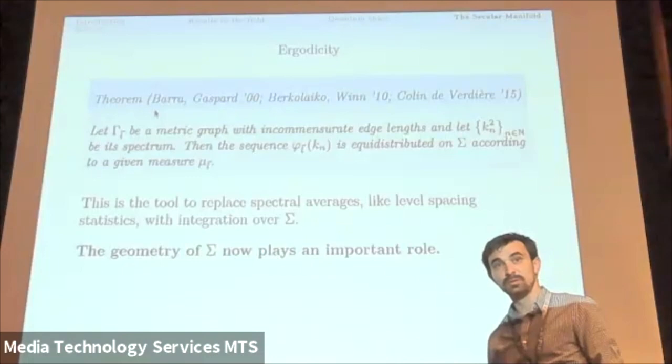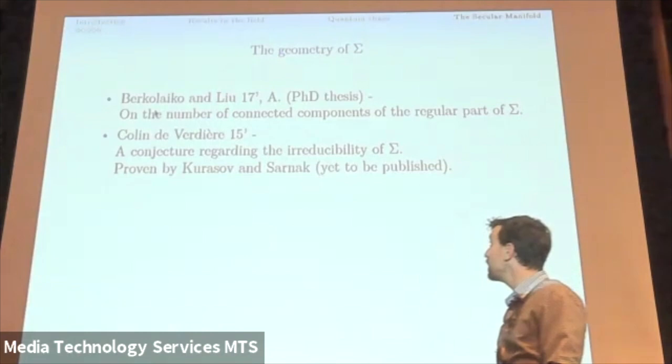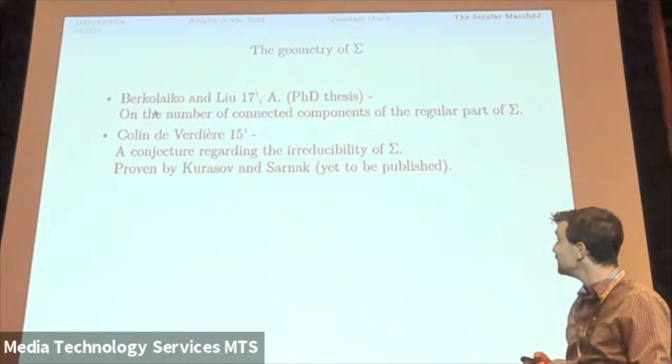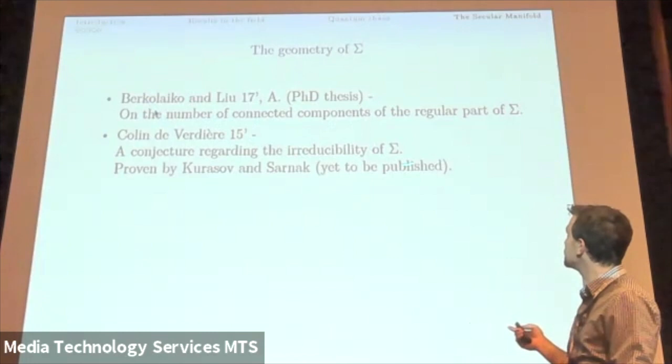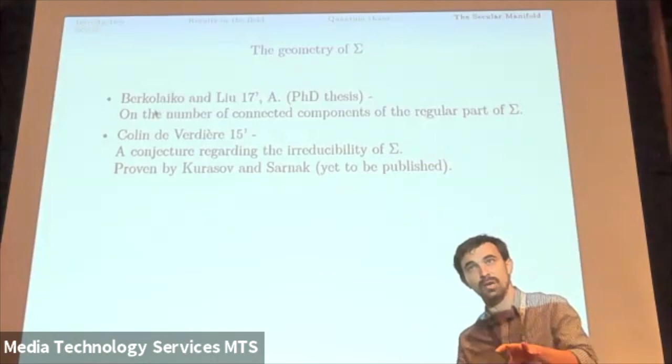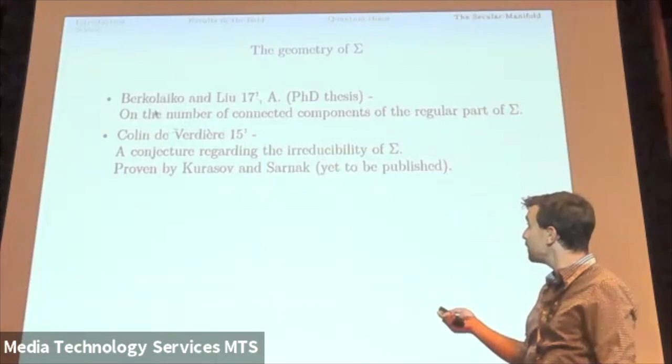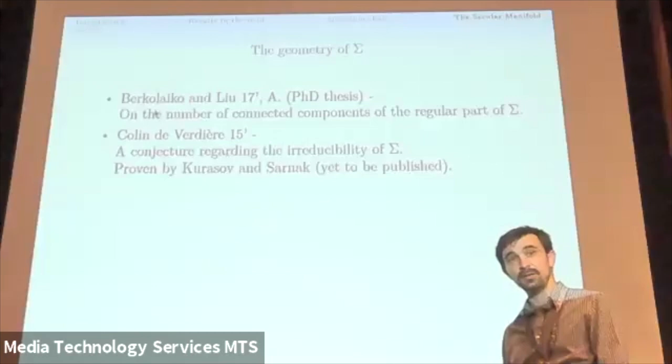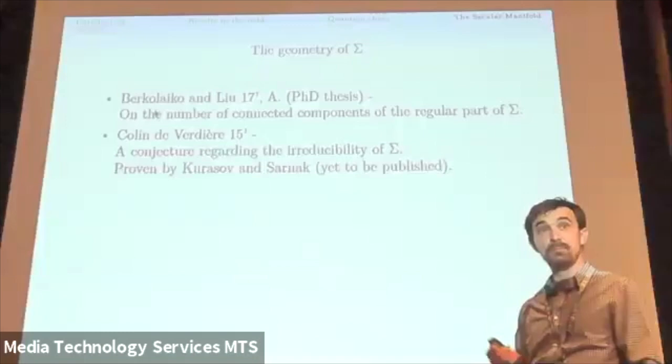So now the geometry of sigma plays an important role. And the last thing I want to talk about is the geometry of sigma. So in 2017, and also I contributed a bit in my PhD, talked about the volume, the number of connected components of the regular part of sigma. So that's not actually a manifold. It's a manifold with singularities. We can talk about its regular part and we can count connected components. Colin de Verdière in 2015 had a conjecture regarding the irreducibility of sigma, which was recently solved by Kurosov and Sarnak in a paper yet to be published.